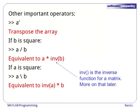Other important operators are the transpose operator, which is a single quote, and two kinds of division. The first division is a forward slash, and it is equivalent to a divided by b if a and b are scalars. If they are arrays, it is equivalent to a times the inverse of b.